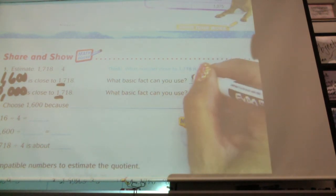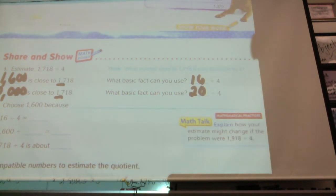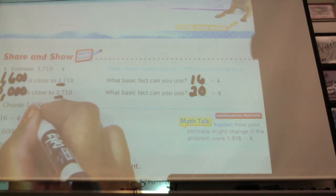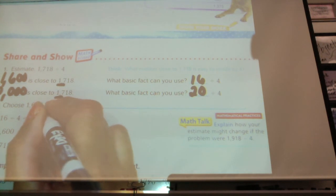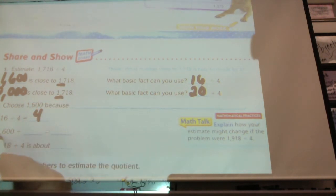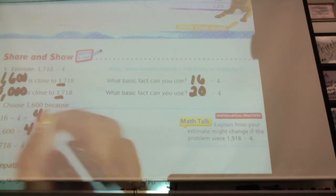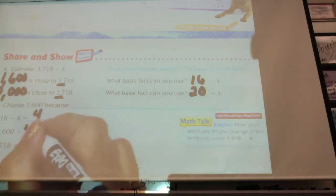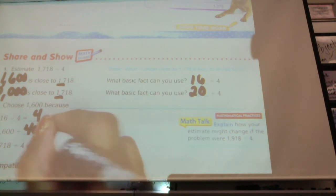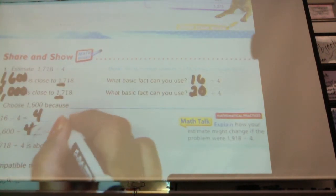So on this one we're using 16 divided by 4. And on this one we're using 20 divided by 4. 16 divided by 4 is 4. So 1,600 divided by 4 is 400. I don't know why it does it that way. 400. Oh, divided by 4 is 400.